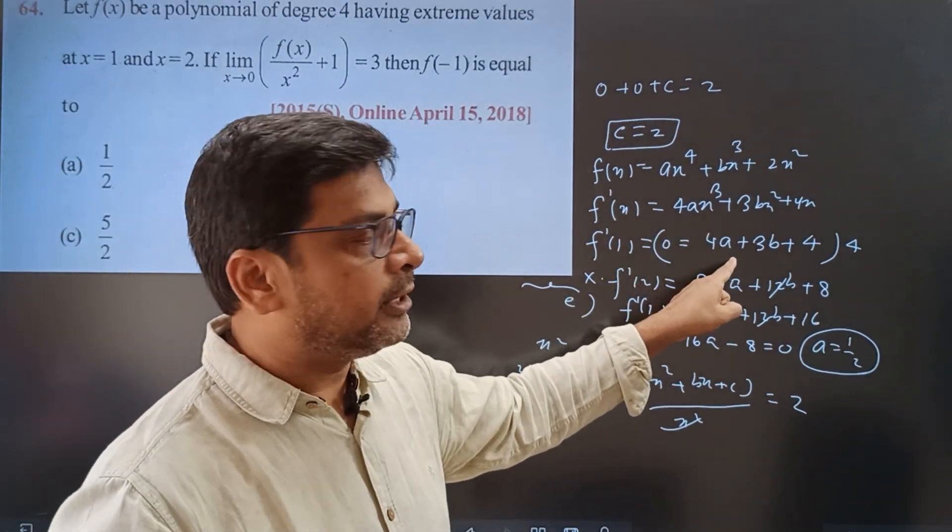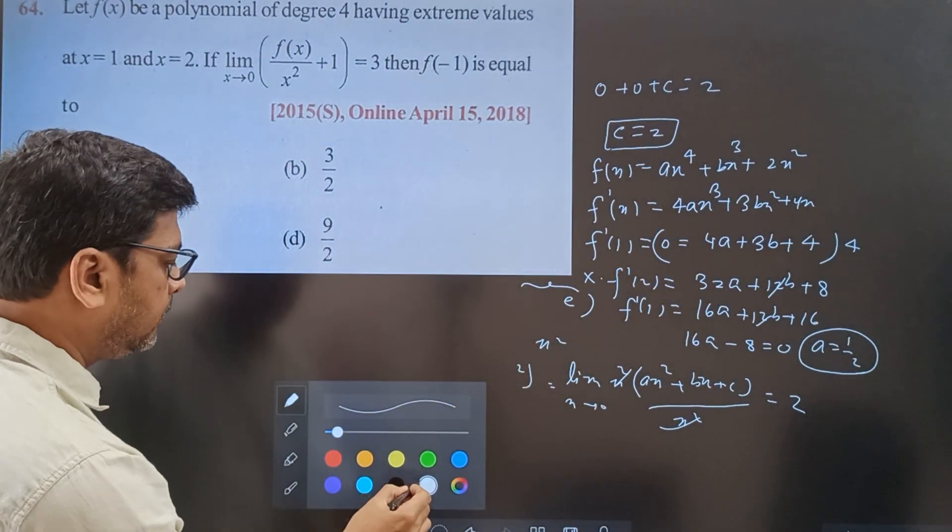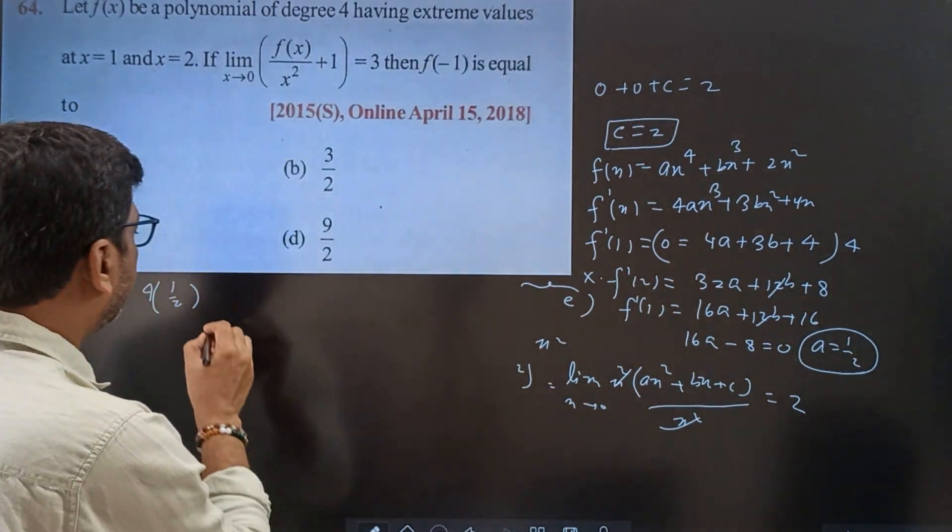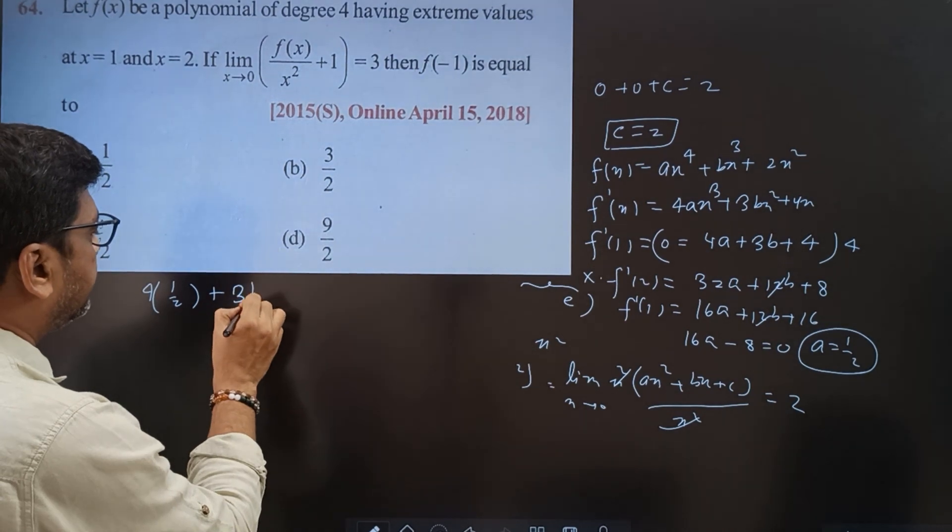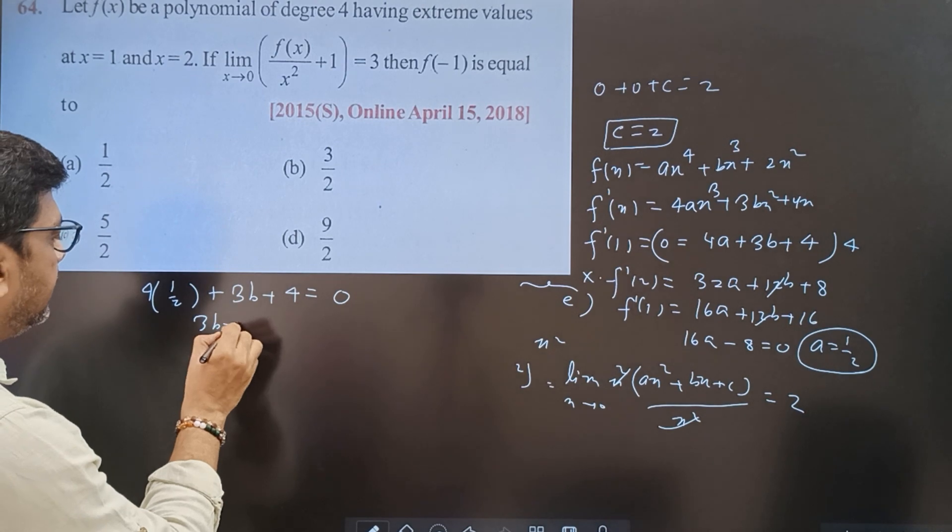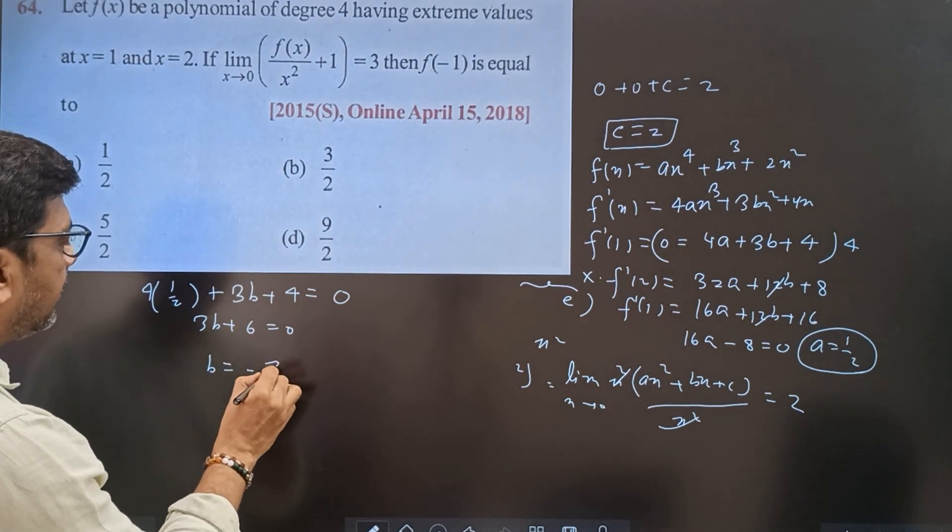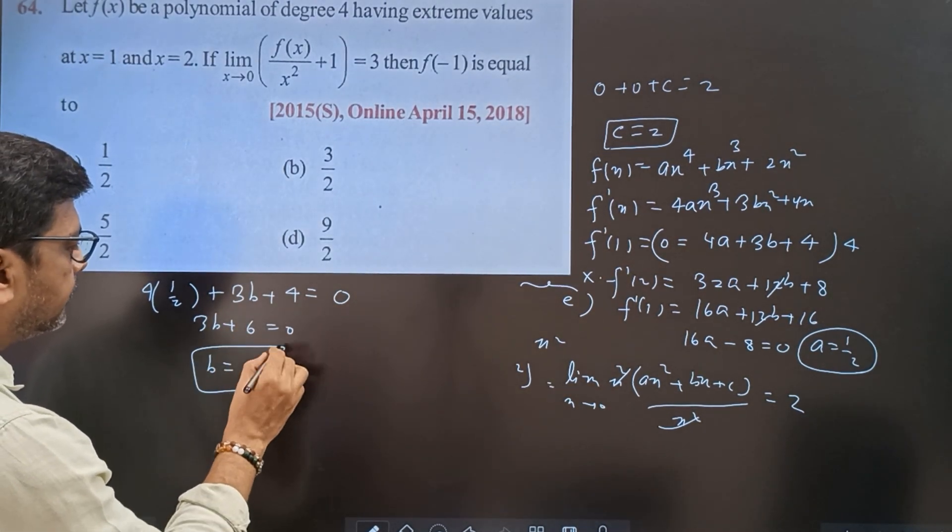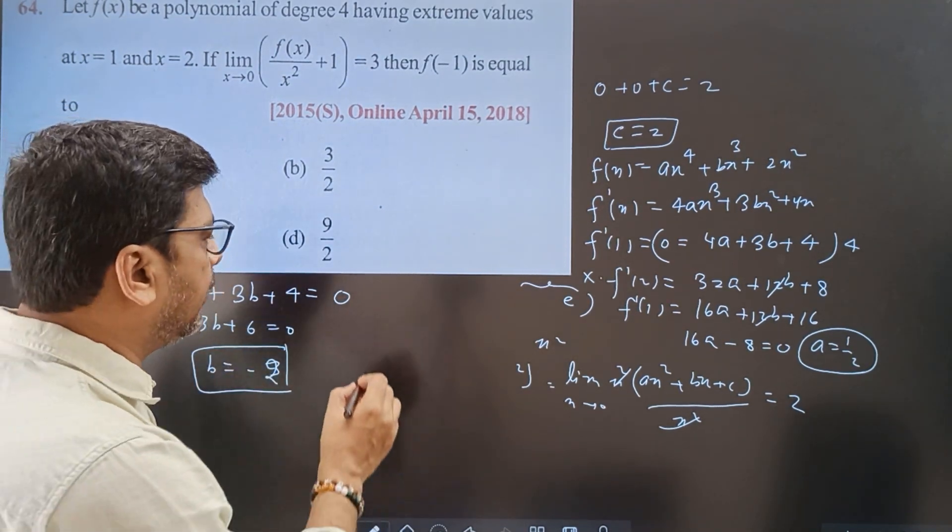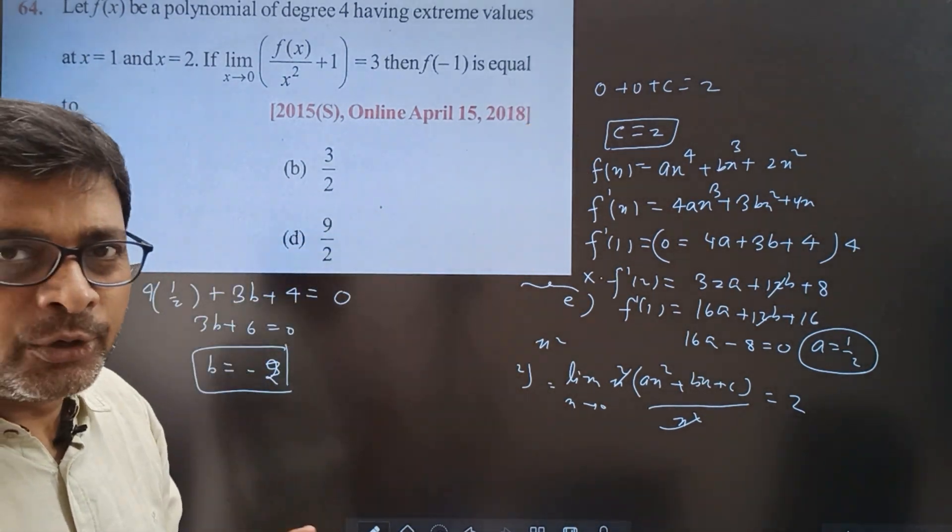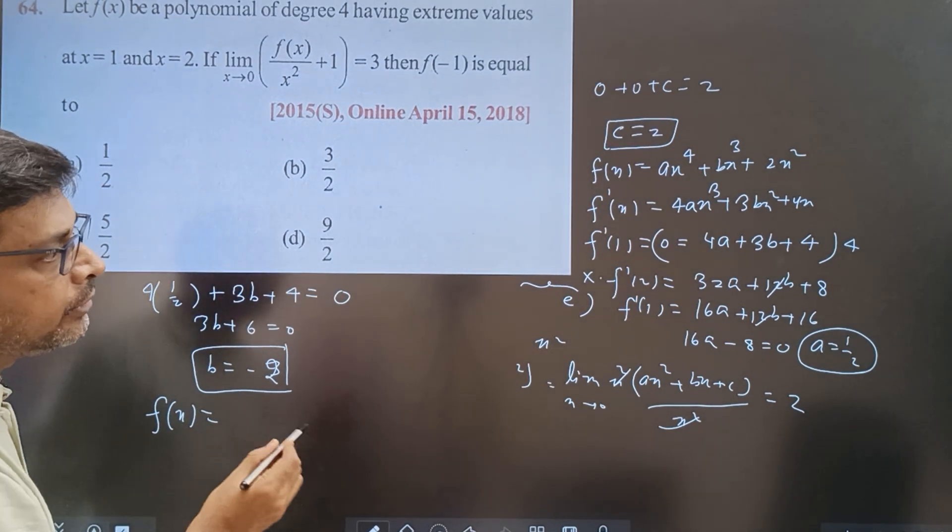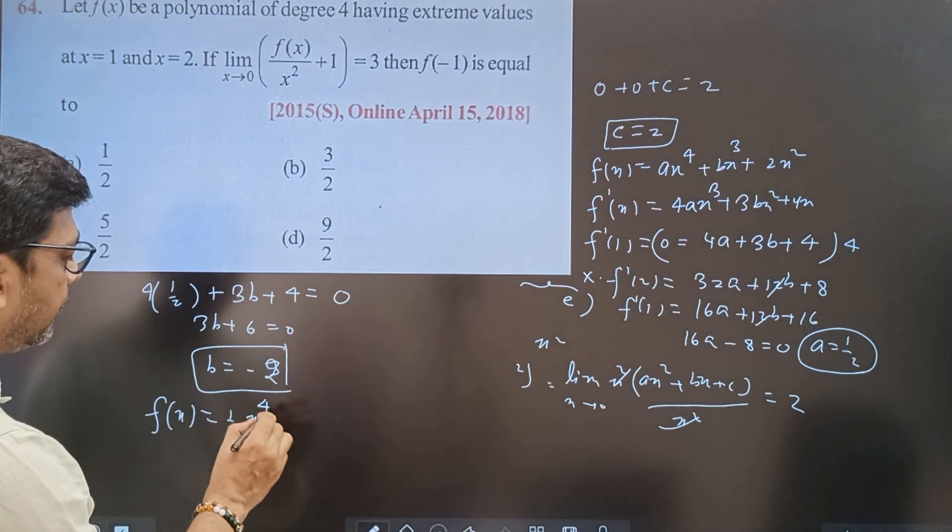a value is 1/2. If I put 1/2 here, 4 into 1/2 plus 3b plus 4 is equal to 0. So b = -2.